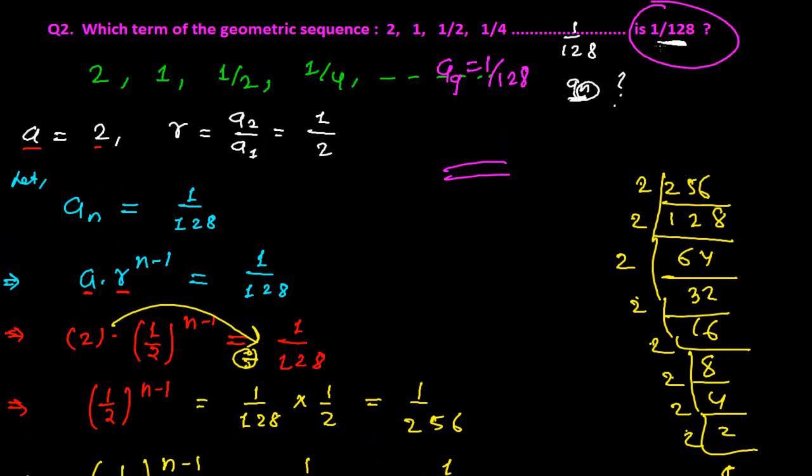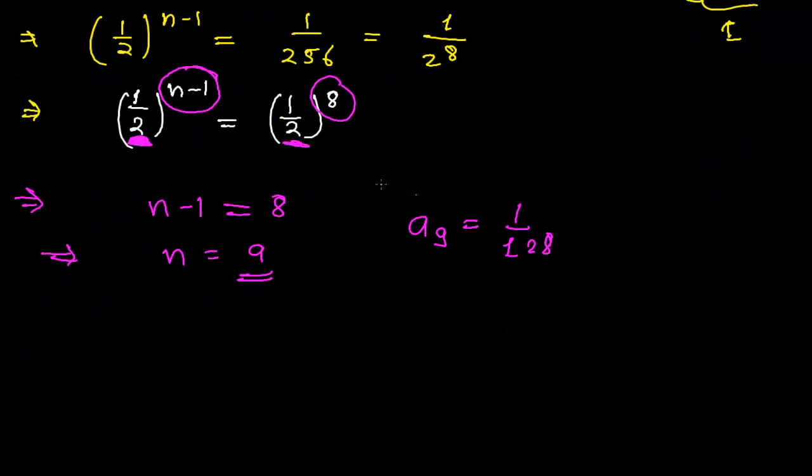In your question, the sequence can be any type, and you can easily get the first term and common ratio. Once you get the first term and common ratio and if you have the nth term, just use the general term formula. Apply it and get the value of n. For that you need to equate both left-hand side and right-hand side—both should have the same base, then equate the powers.